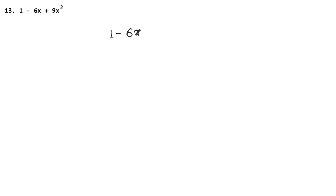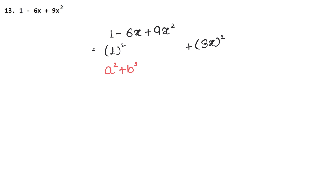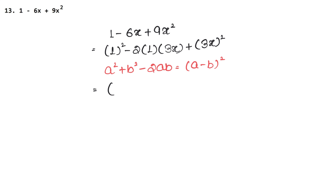Factorize 1 - 6x + 9x². Now 9x² = (3x) whole square, and 1 = (1) whole square, with a minus sign in between. So we use the (a - b)² formula. Here a is 1 and b is 3x. Check: 2 × 1 × 3x = 6x with minus sign — that matches. So the answer is (1 - 3x) whole square. Let's do the next question now.